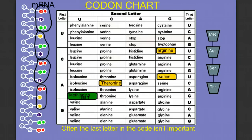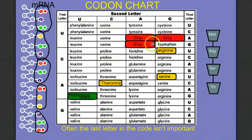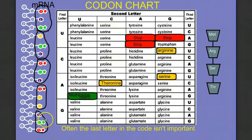Finally, I get to the codon UGA. When I use my codon chart to find UGA, I interestingly find one of three stop codons, or termination codons. There are three codons that do not code for a corresponding amino acid — they tell the ribosome that's the place to stop translation. So we're done building our amino acid sequence.